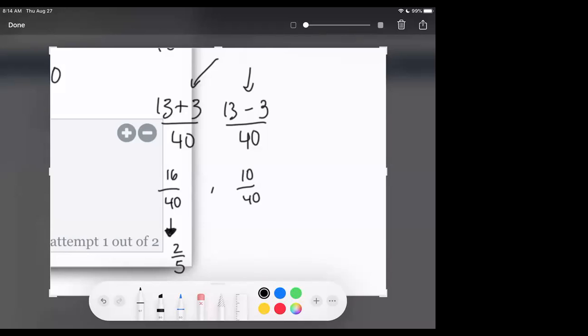So 16 divided by 8 gives us 2/5. This is one answer. And then, oh yeah, 16 divided by 8 is 2, 40 divided by 8 is 5. So this is one of our answers.